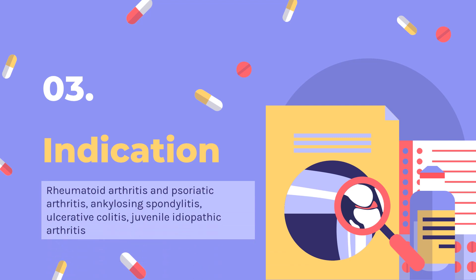Golimumab is used in adults: as an adjunct to methotrexate treatment in patients with moderate to severe active rheumatoid arthritis (RA); in patients 2 years old and above with active psoriatic arthritis (PsA); and as a single agent in patients with active ankylosing spondylitis (AS), or in combination with methotrexate.